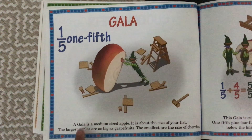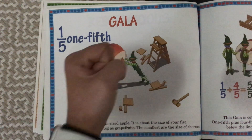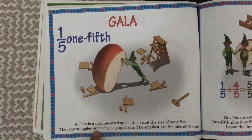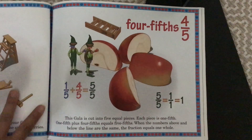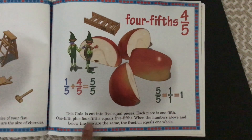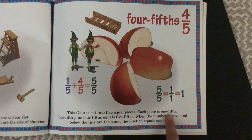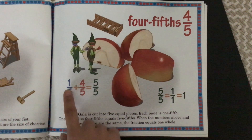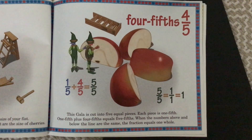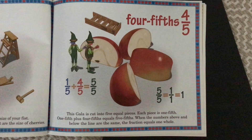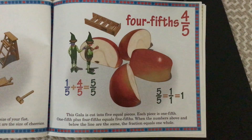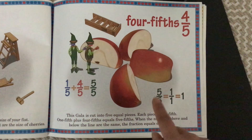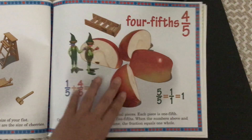Gala. A gala is a medium-sized apple — it is about the size of your fist. The largest apples are as big as grapefruits. The smallest are the size of cherries. Four-fifths. This gala is cut into five equal pieces. Each piece is one-fifth. One-fifth plus four-fifths equals five-fifths. When the numbers above and below the line are the same, the fraction equals one whole — so five out of five means the same thing as one whole, because if you eat five out of five pieces, you ate the whole thing.